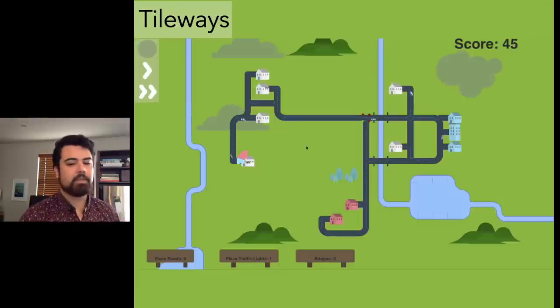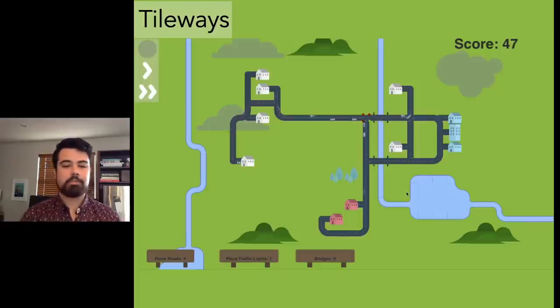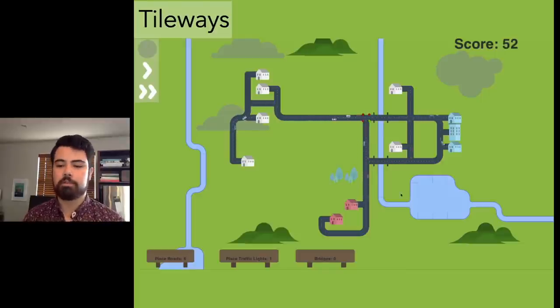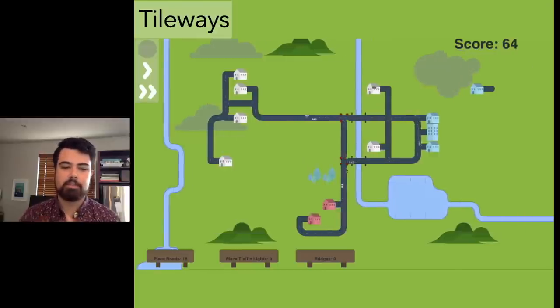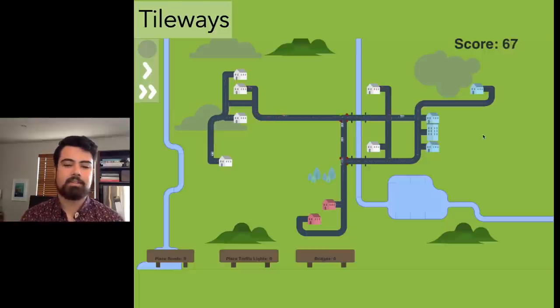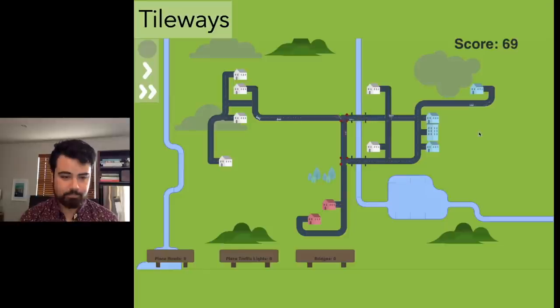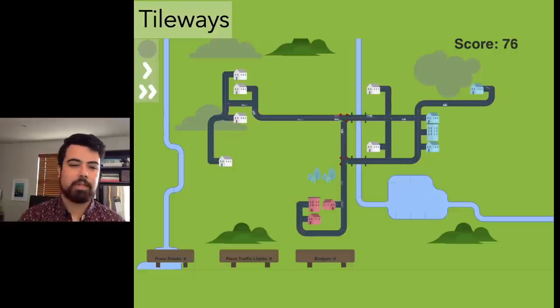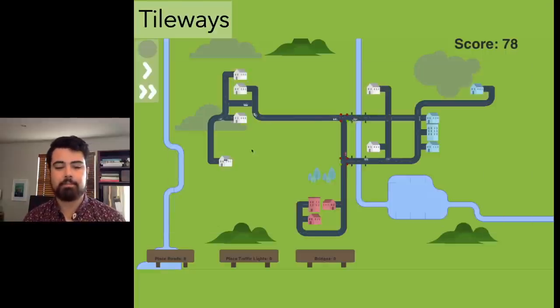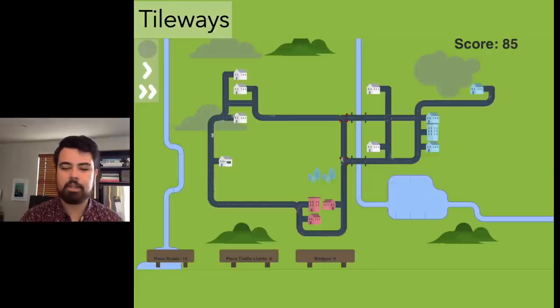This one was called Tileways Alpha, and this is where it starts to resemble the game we have today. Like Mini Metro, we have a slowly expanding city, the player gets a choice of resources each week, and suburbs of houses require cars to leave to get to a destination. The player draws roads by placing down these tiles that automatically connect.